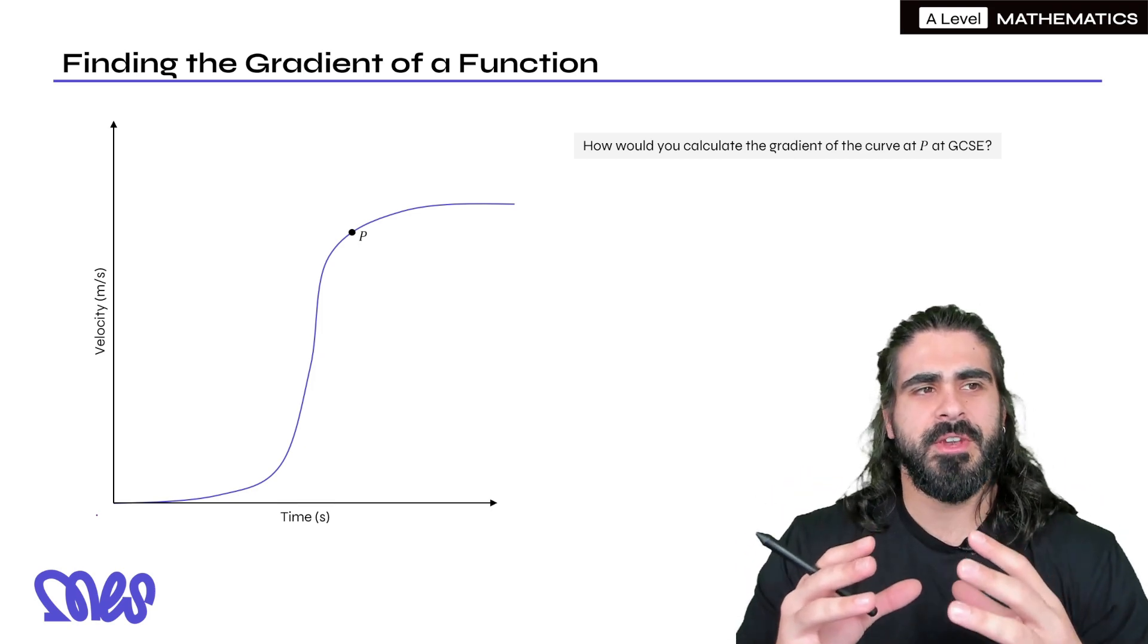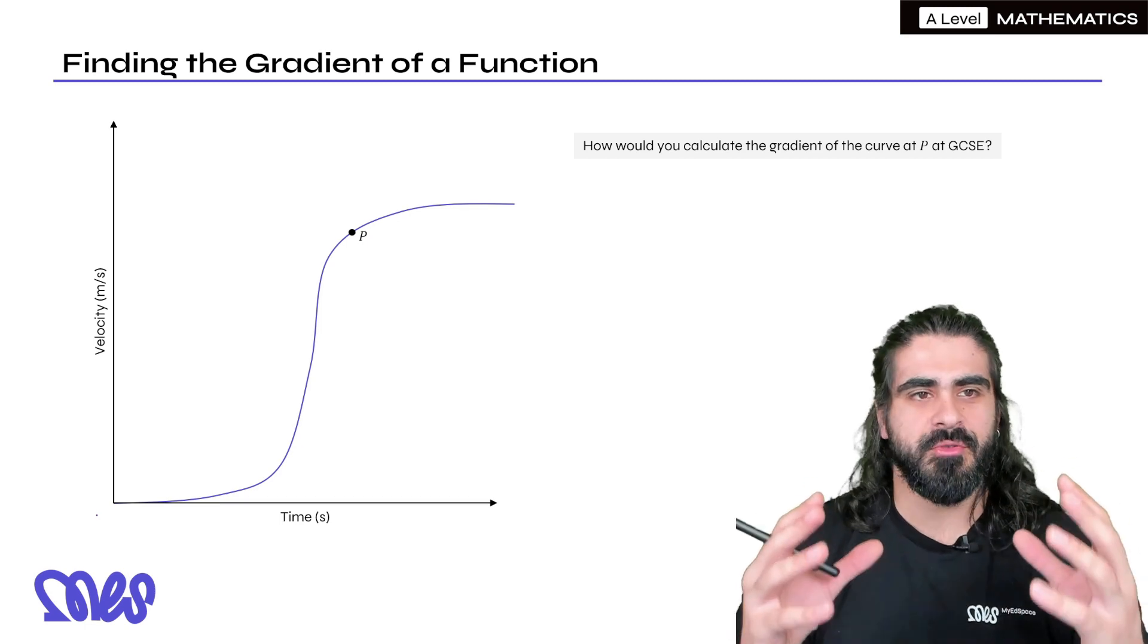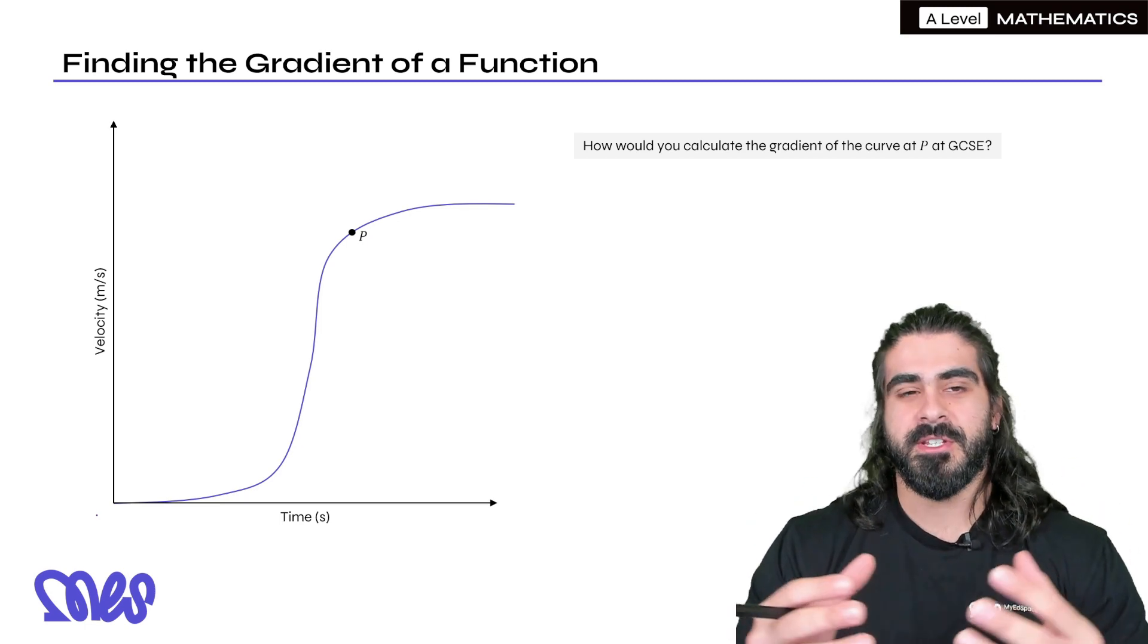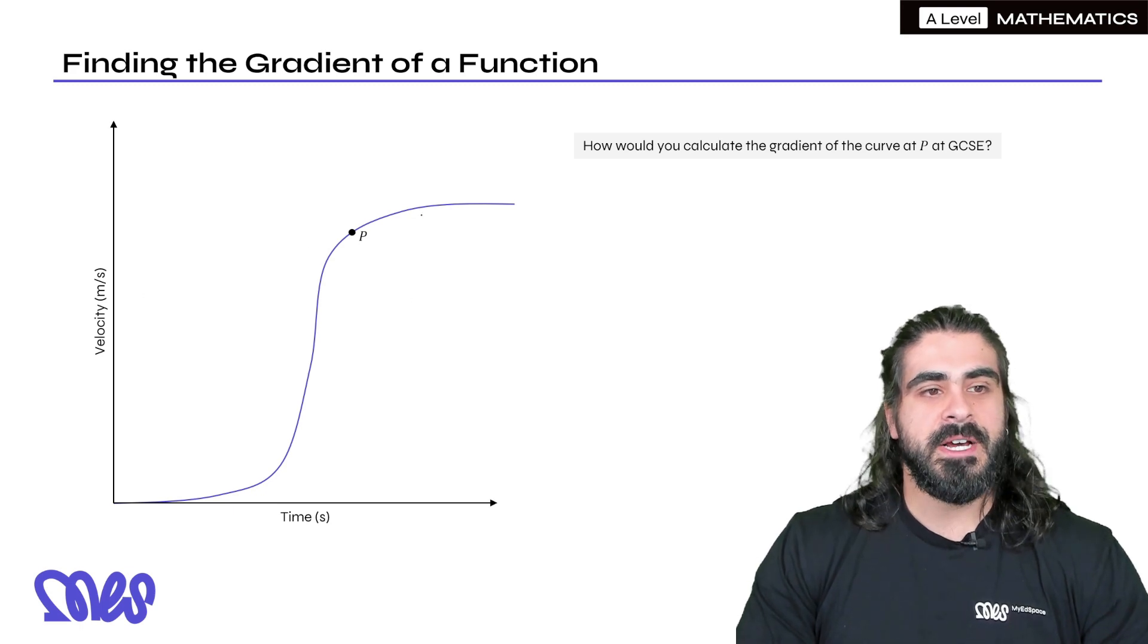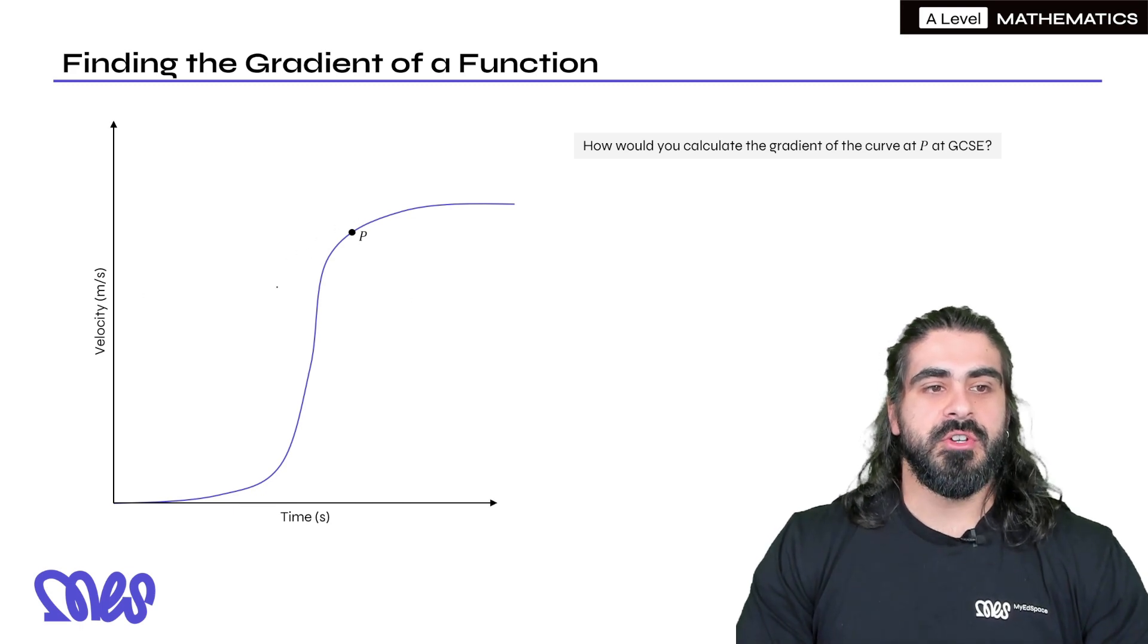So keeping it nice and simple for now, to find the ordinary gradient of a function, you would have studied it a bit at GCSE. You would have been given a velocity time graph, and they asked you to find the gradient.